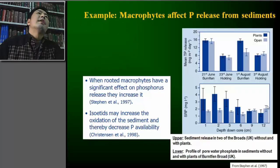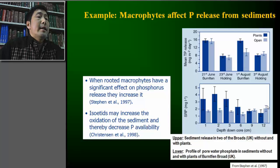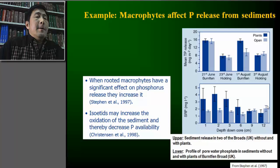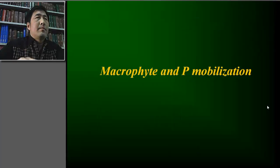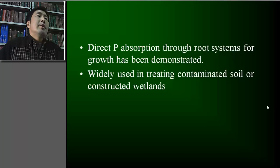Here is an example. Almost 20 years ago, Stephen studied the release of phosphorus from sediment. He found that macrophytes can increase the phosphorus release from sediment. However, because of the oxidation of sediment by macrophytes, the phosphorus availability decreased. Phosphorus mobilization by macrophytes has been demonstrated, and these results have become the basis for using macrophytes to treat contaminated soils or in constructed wetlands.